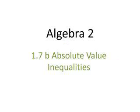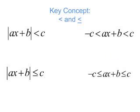Absolute value inequalities will generate compound inequalities like you saw in Lesson 1.6. Remember, compound inequalities are connected by the words 'and' or 'or.' Let's take a look at this key concept page where we look at absolute value inequalities using less than and less than or equal to.